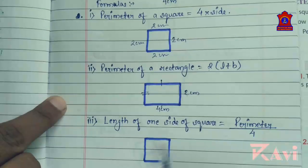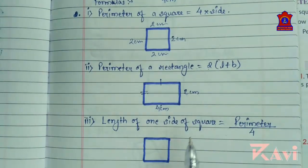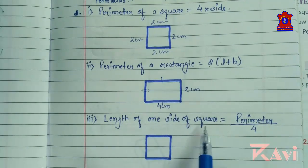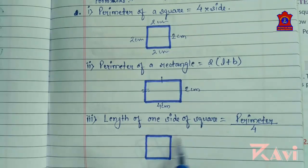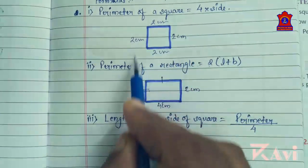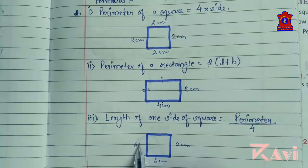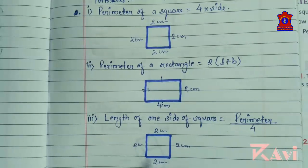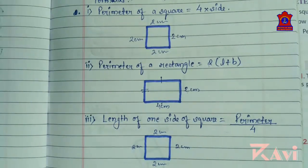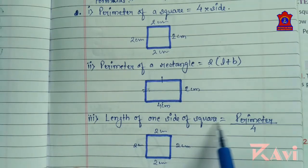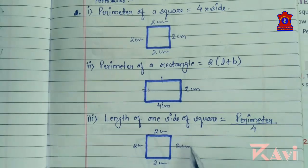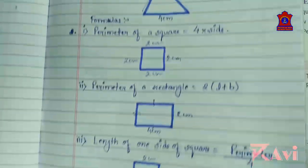Sometimes you will get questions where you need to find the length of one side of a square. A square has all 4 sides equal, so if the sides are not given but the perimeter is given, then the formula you are going to use is: length of one side of square equals perimeter divided by 4. This is the formula you are going to use.